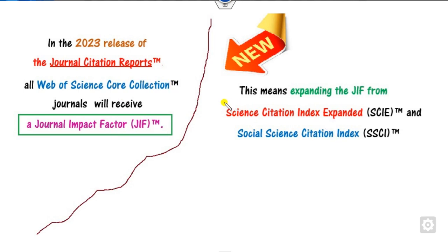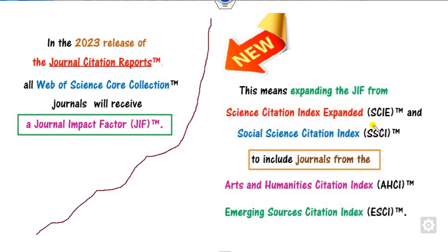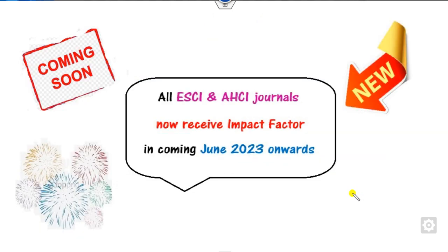This means that previously only SCIE and SSCI indexed journals received an impact factor, but now from June 2023 onwards, AHCI as well as Emerging SCI journals will also receive their impact factors. All Emerging SCI and AHCI articles will now receive impact factors starting June 2023. This major announcement has been posted on the JCR website as 'coming soon in June 2023.'